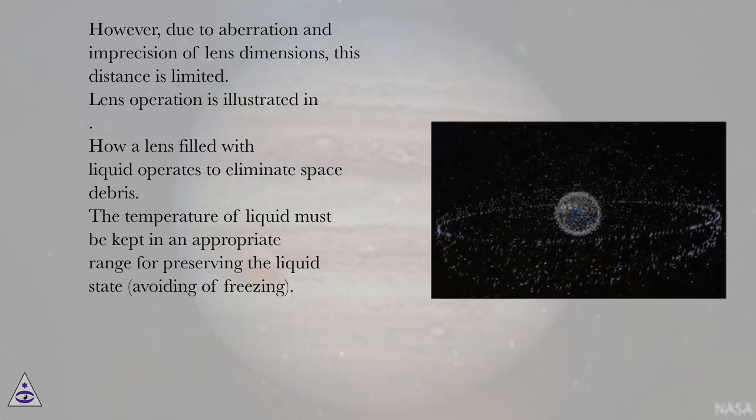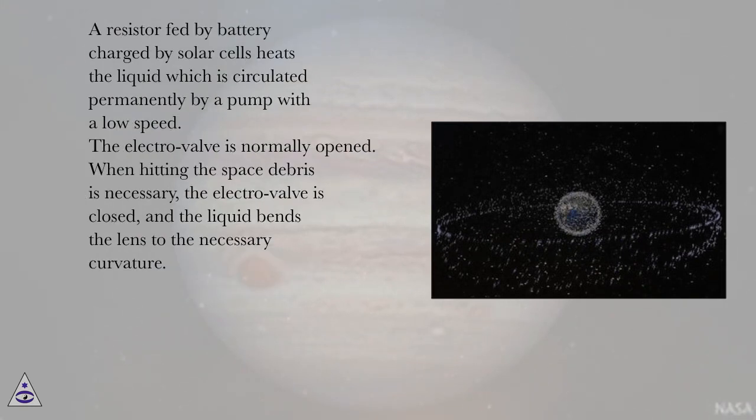Lens operation is illustrated in How a Lens Filled with Liquid Operates to Eliminate Space Debris. The temperature of liquid must be kept in an appropriate range for preserving the liquid state, avoiding freezing. A resistor fed by battery charged by solar cells heats the liquid which is circulated permanently by a pump with a low speed. The electro-valve is normally opened. When hitting the space debris is necessary, the electro-valve is closed, and the liquid bends the lens to the necessary curvature.